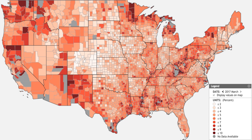The BLS reported that in 2017, there were approximately 7.5 million persons age 16 and over working multiple jobs, about 4.9% of the population — relatively unchanged from 2016. About 4 million worked a full-time primary job and a part-time secondary job.